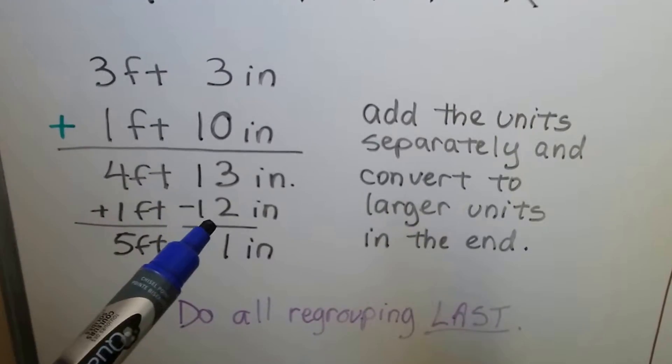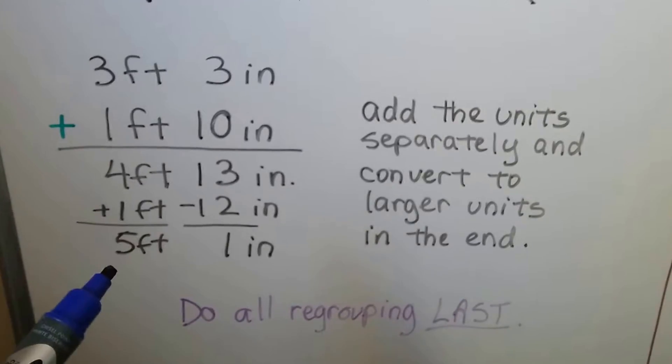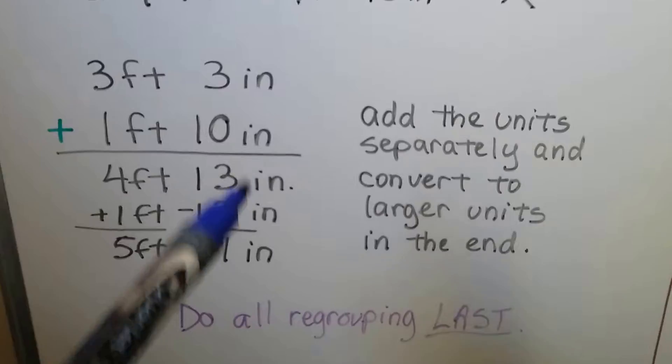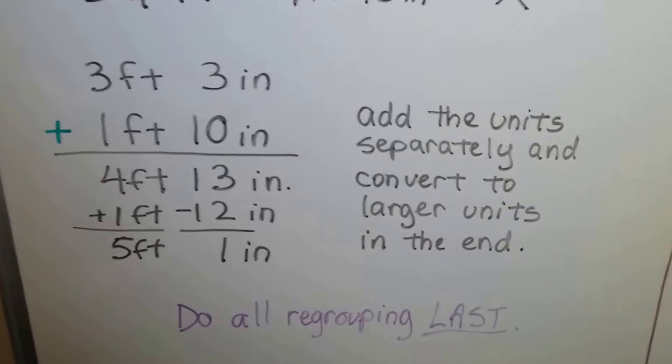In 13 inches, we can pull out 12 inches as 1 foot and give it to the feet side. So that means we have 5 feet, 1 inch. So do all the adding for that unit first and that unit. Then we regroup.